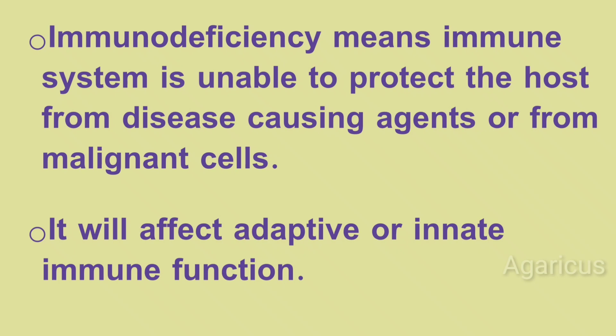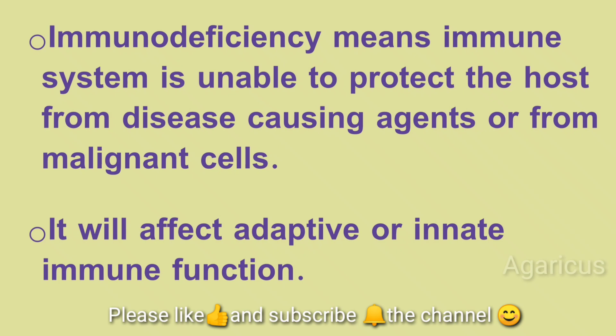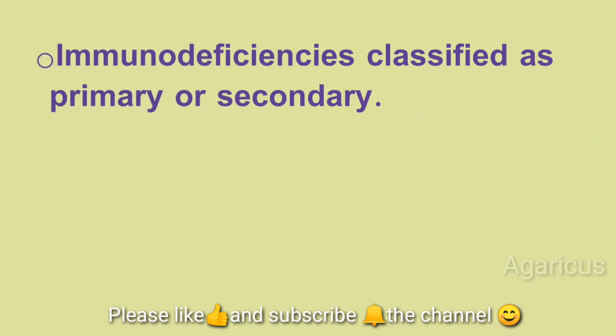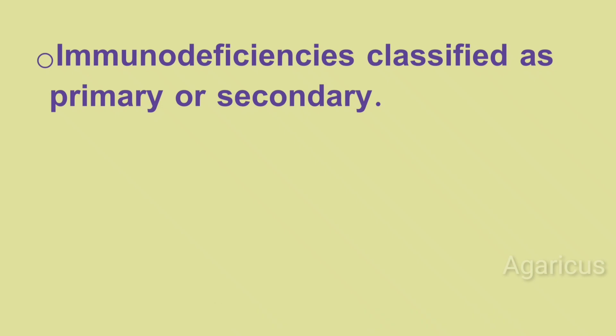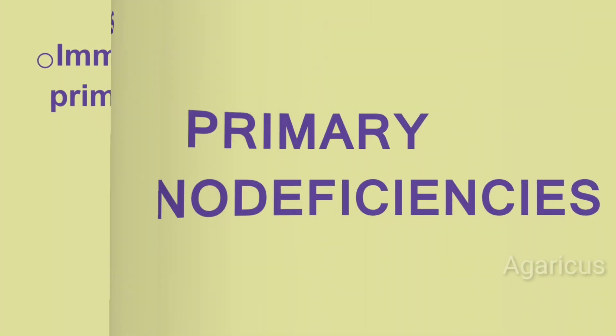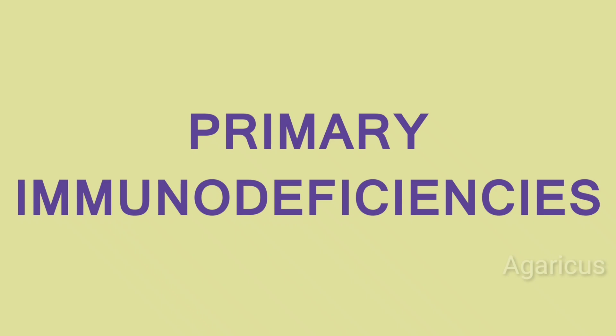For example, cancerous cells in the immune system. Immune Deficiencies are classified as primary or secondary. We will discuss primary immunodeficiencies.